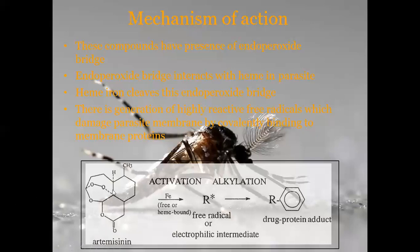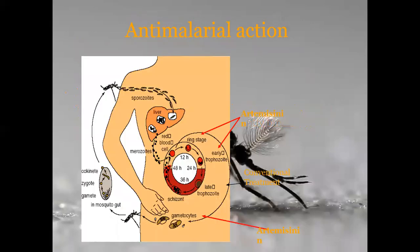Here, artemisinin — endoperoxide bridge — activation, pre-heme bound — free radicals are the electrophilic intermediate. The presence of this electrophilic intermediate leads to drug-protein adduct formation. That means the parasite membrane proteins are damaged by covalent binding. This is the anti-malarial action of artemisinin.